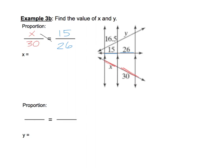Now we can do our cross product. So I have 26X. And then 15 times 30 is 450. Take a calculator and divide by 26. And 450 divided by 26 is about 17.3.